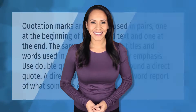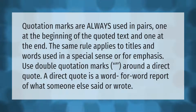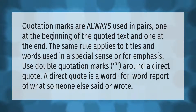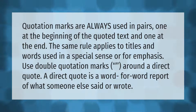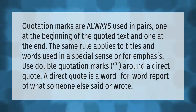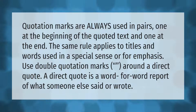Quotation marks are always used in pairs — one at the beginning of the quoted text and one at the end. The same rule applies to titles and words used in a special sense or for emphasis. Use double quotation marks around a direct quote.